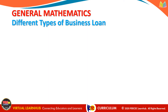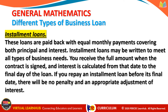Another type of business loan is installment loans. These loans are paid back with equal monthly payments covering both principal and interest. Installment loans may be written to meet all types of business needs. You receive the full amount when the contract is signed and interest is calculated from that date to the final day of the loan. If you repay an installment loan before its final date, there will be no penalty and an appropriate adjustment of interest. Installment loans are often the best option for financing the purchase of a business asset because the loan term can coincide with the life of the asset. For example, a car loan is often for 3 to 5 years, which is the time an average vehicle is owned before being traded in for a newer model.